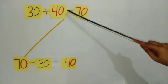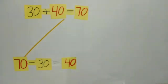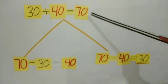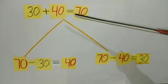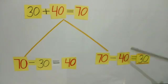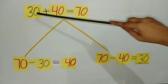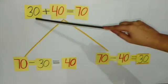Now, when I subtract 40 from 70, what is left? Yes, 30 — meaning we get the first number 30.